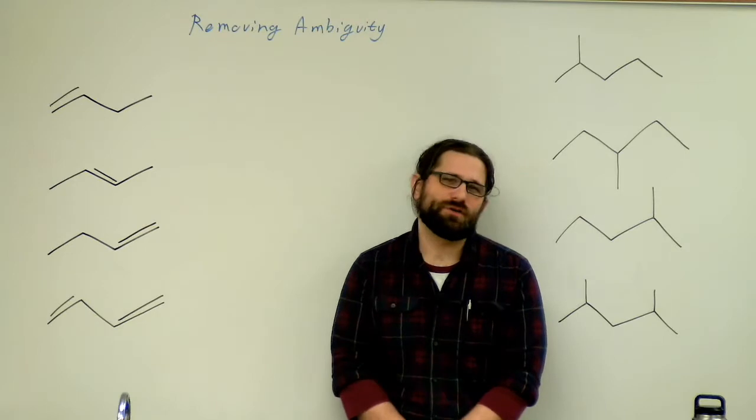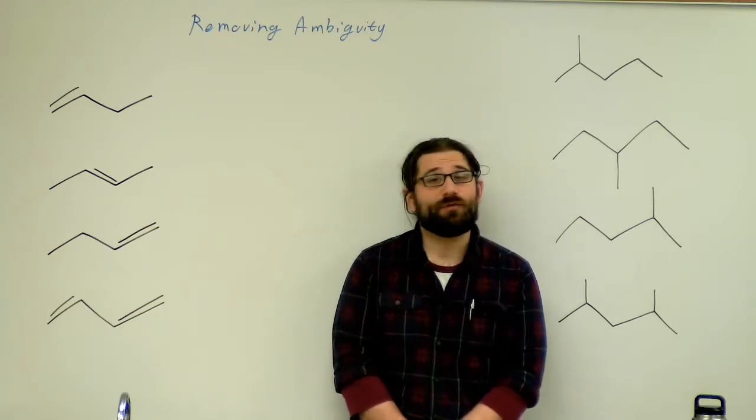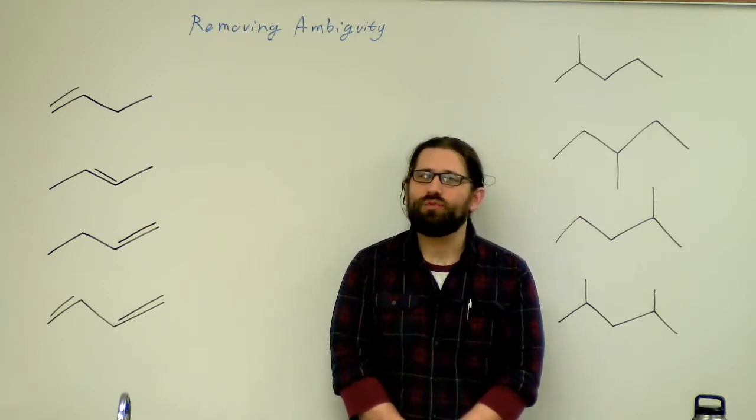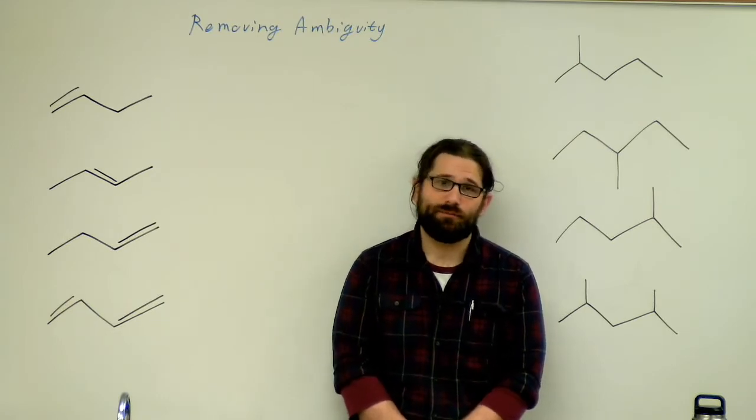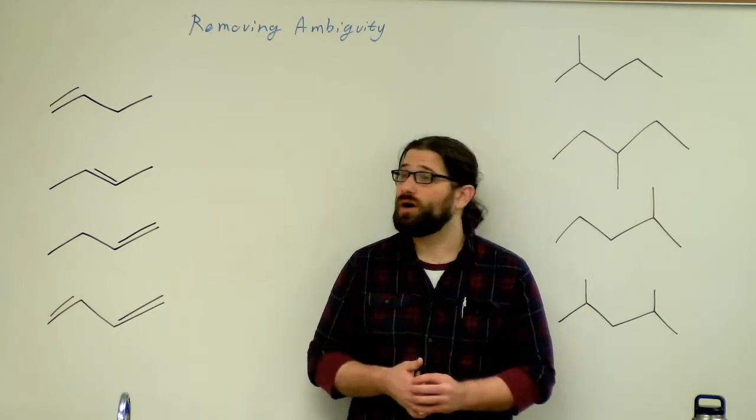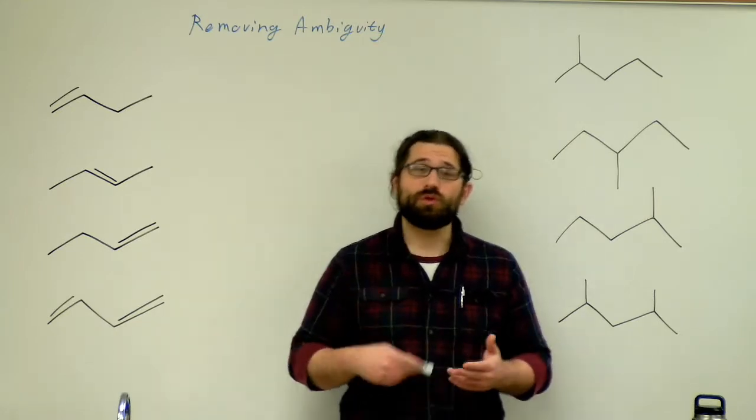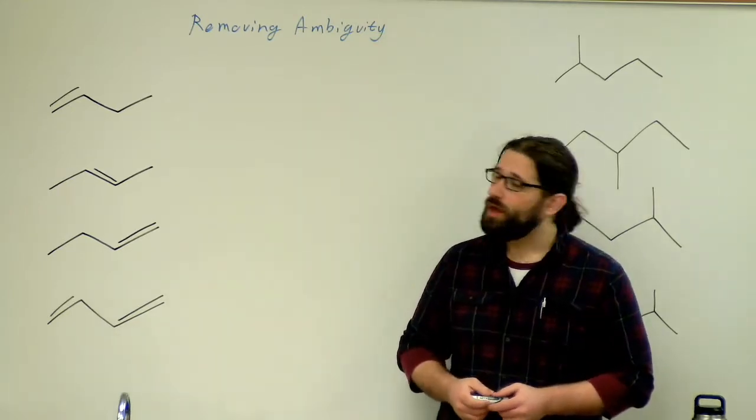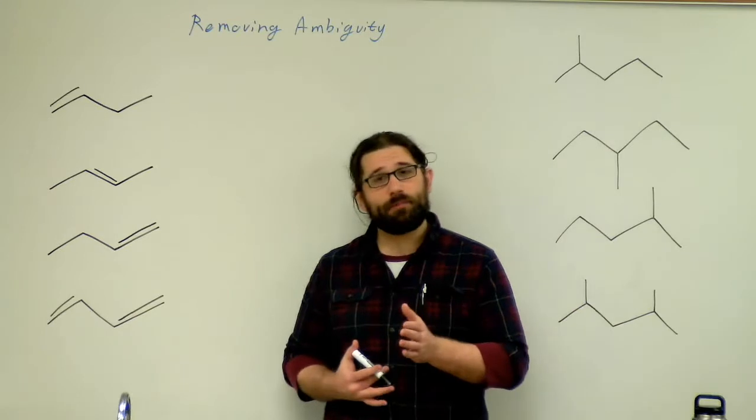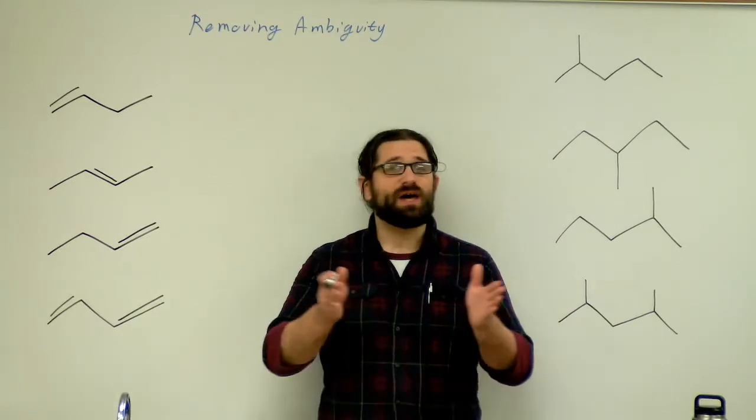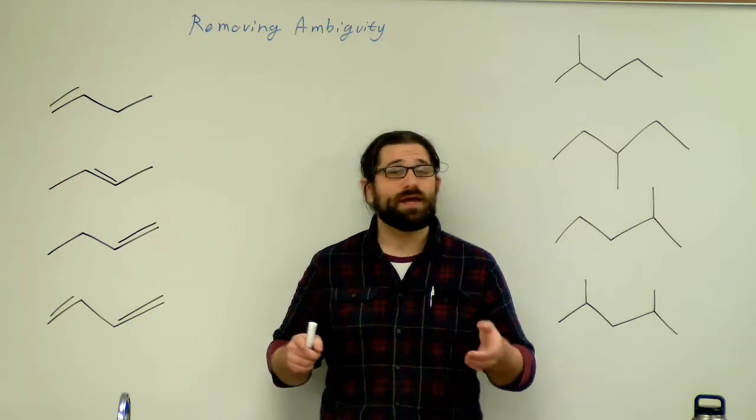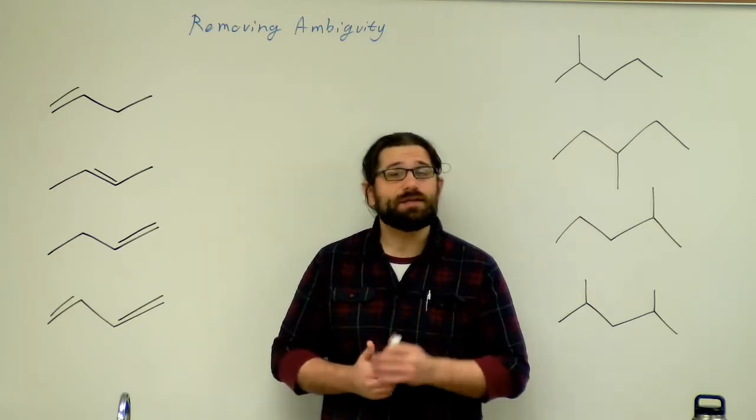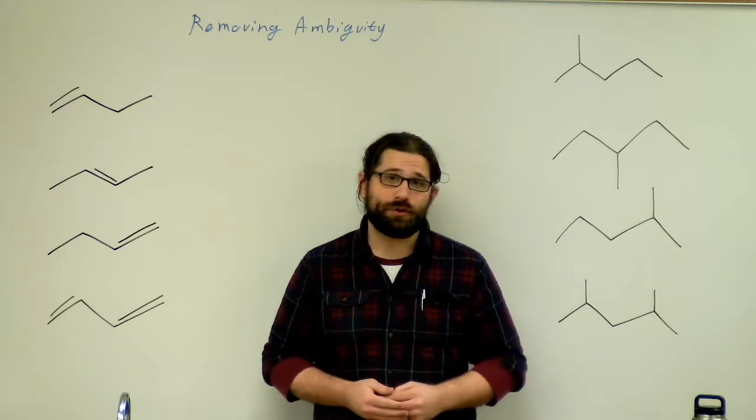We'll learn more about isomers in the next unit, but for now we need to be able to remove as much ambiguity from our naming systems as possible. This is because our functional groups, which we will learn a lot more of, are going to have very different properties between the different types of functional groups, but will also have subtly different properties and subtly different reactivities depending on where they're placed on a molecule.